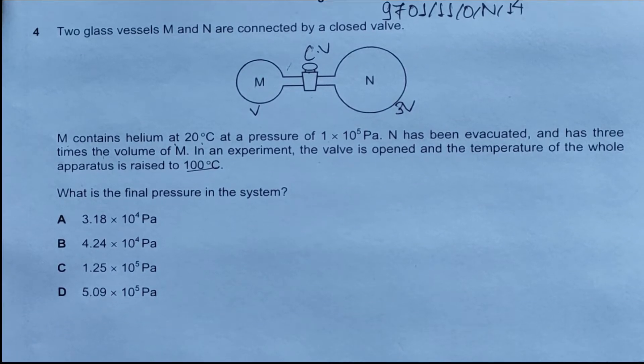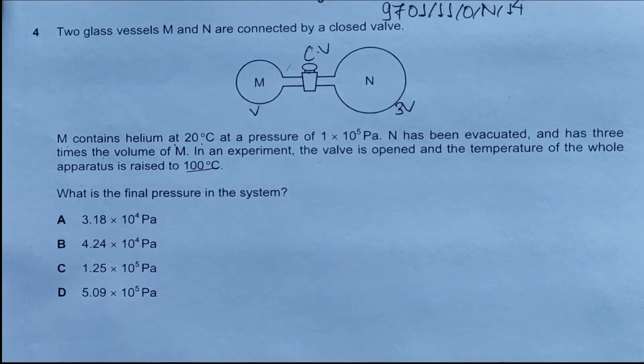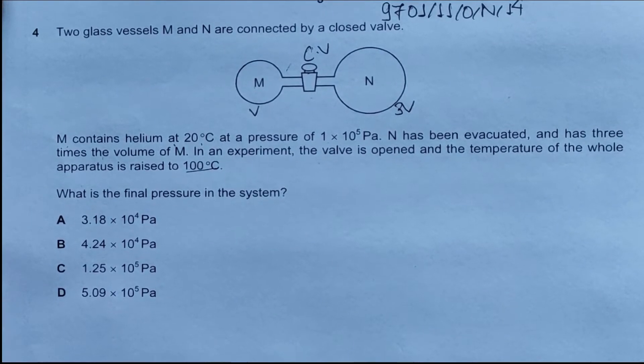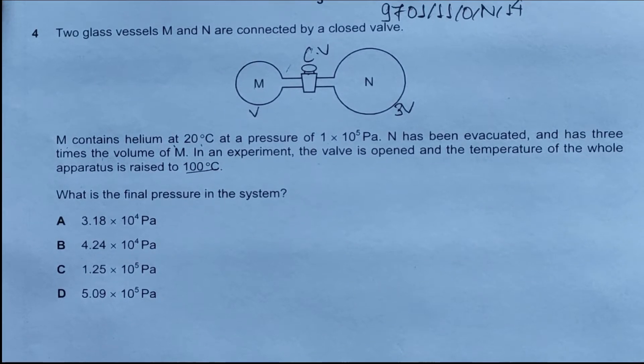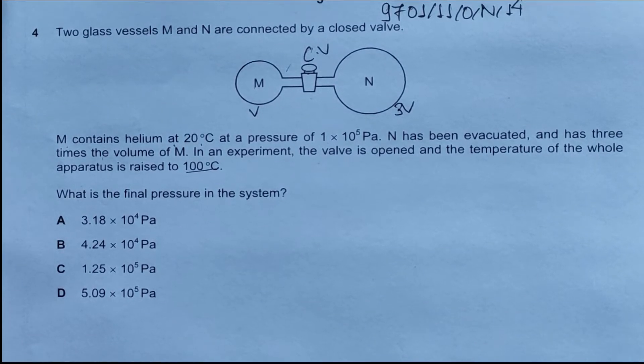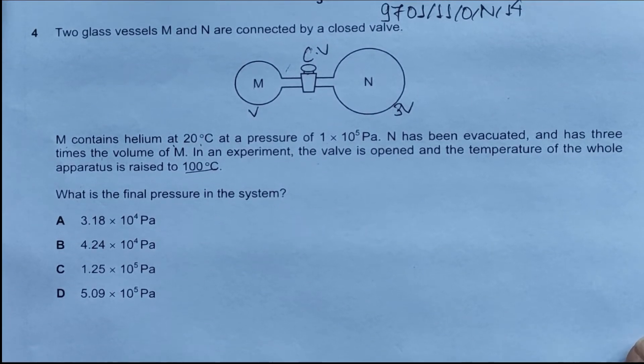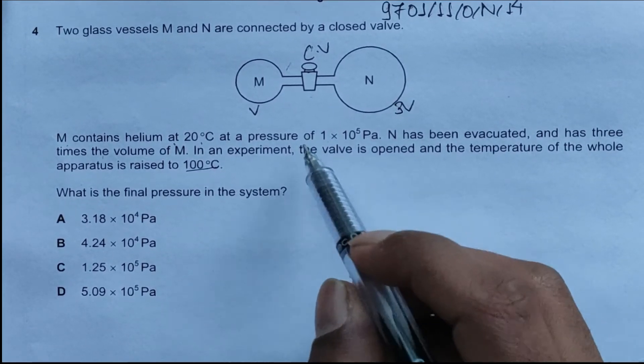For this question, we're going to assume that helium is an ideal gas. Among all real gases, helium most closely simulates an ideal gas because it is the smallest gaseous element and has very minimal van der Waals forces of attraction, so it satisfies the case to be called an ideal gas.